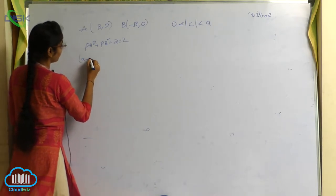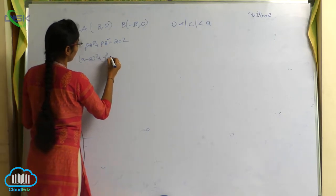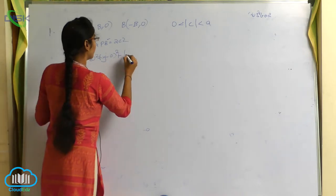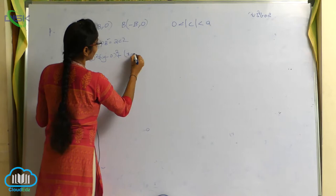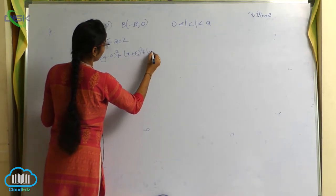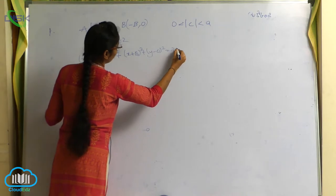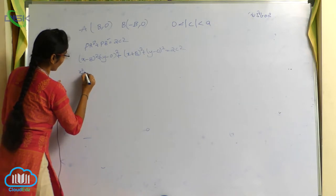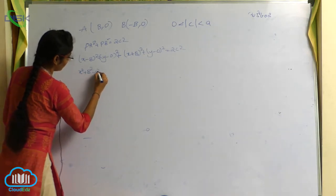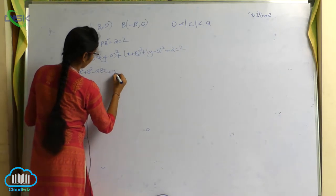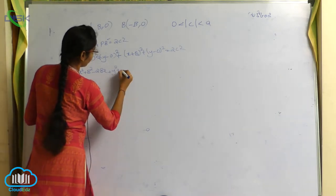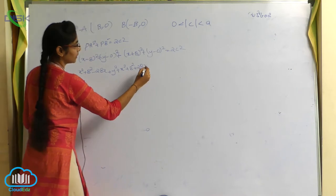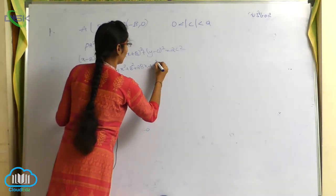Expanding: x minus b whole square plus y minus 0 whole square plus x plus b whole square plus y minus 0 whole square is equals to 2 c square. Using the formula a minus b whole square: a square x square plus b square minus 2bx plus y square, plus x square plus b square plus 2bx plus y square equals 2 c square.